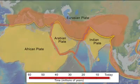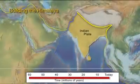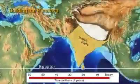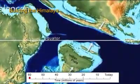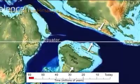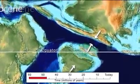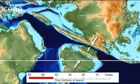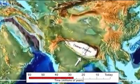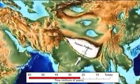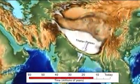Let's go back 60 million years to understand the plate tectonic history of the Himalayan region. About 50 million years ago, the Indian continent collided with southern Eurasia and began constructing the Himalayas and the Tibetan Plateau, the highest mountain range and the largest continental plateau on Earth.